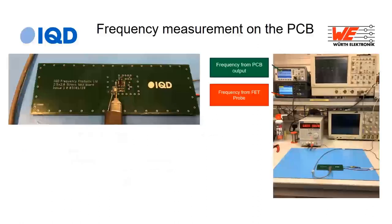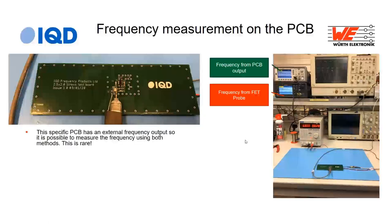Here I'm pushing the FET probe onto the active pin of the crystal. On the oscilloscope you can see the purple trace — that's the frequency coming directly from the probe. I take that signal output and feed it into a frequency counter to get the frequency reading. On this particular PCB, I also have a buffered RF output, so I'm lucky — I can measure the frequency without relying solely on the FET probe.